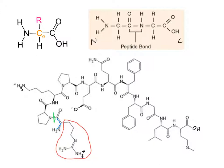Now it becomes easier because we already have our first amino acid at the N-terminus: amine, alpha carbon, and carbonyl. Then there's the next amine. Checking whether this is the alpha carbon — the next group is not the carbonyl, so we continue further: there is the carbonyl group, making this the alpha carbon. So this is our next amino acid, and this right here is our peptide bond. Then we have amine, alpha carbon, and carbonyl, making this the next peptide bond.